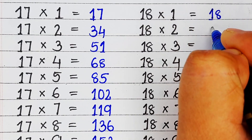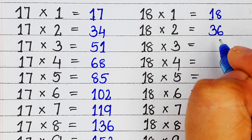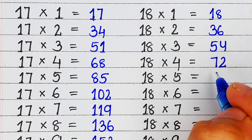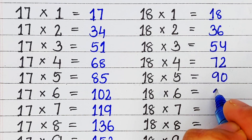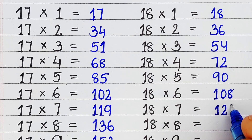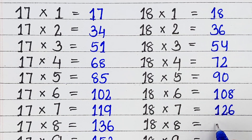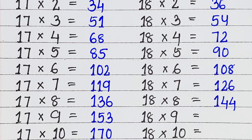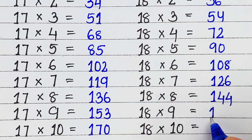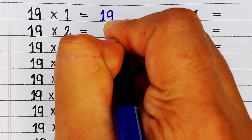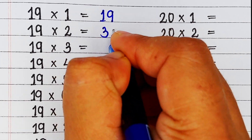Next is table of 18. 18 1s are 18, 18 2s are 36, 18 3s are 54, 18 4s are 72, 18 5s are 90, 18 6s are 108, 18 7s are 126, 18 8s are 144, 18 9s are 162, 18 10s are 180.